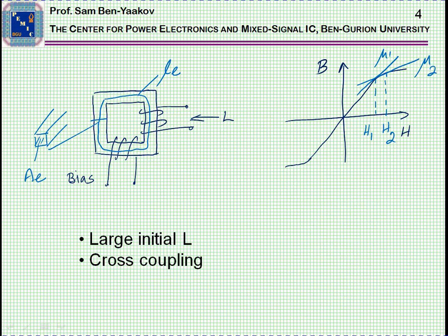We have a problem of the cross-coupling, but there is another problem. The problem is that with this idea here, the initial inductance is very large, because we are starting here with no bias, and then we have to move from here to here. At the very beginning, the inductance looks very large.